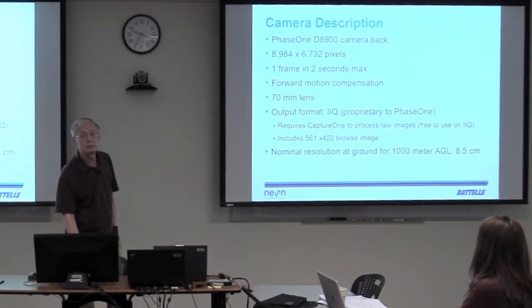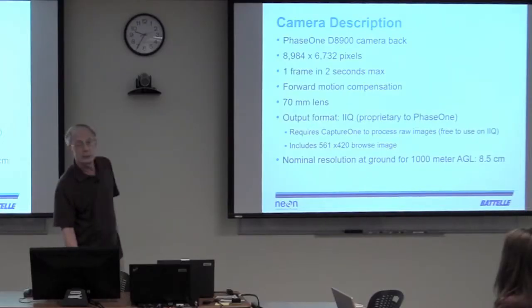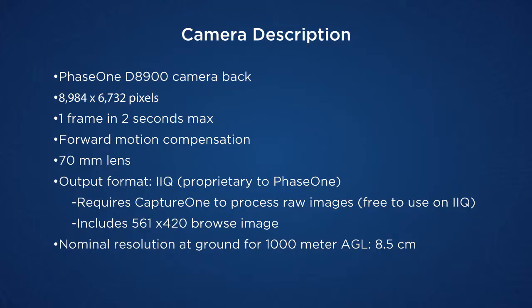The camera itself — the camera back is made by Phase One. You can see the number of pixels. At best it can take one frame every two seconds. It has a forward motion compensator so that as the plane is flying along at 100 knots, it minimizes the blurring on the ground. The output format is called IIQ, which is proprietary to Phase One, meaning to deal with the really raw images you need to use their software called Capture One, which is free for this particular image format. The nominal resolution when flying at 1000 meters above ground level is 8.5 centimeters for the raw data.